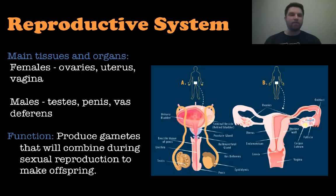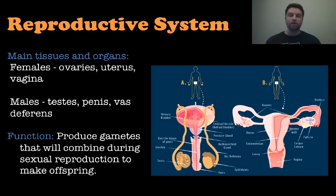Finally, we have the reproductive system. The main tissues here are different for male and female. Females have ovaries, the uterus, and vagina. Males have testes, penis, and vas deferens. The function of this system is to produce gametes, which combine during sexual reproduction to make offspring. You can see there are a lot of different systems that our bodies use in order to make us function as a wonderful living organism.